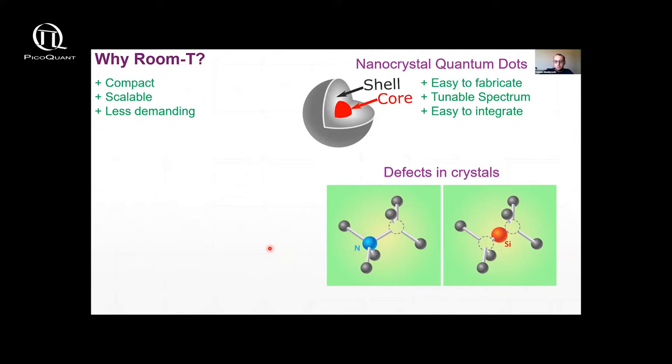However, trying to work at room temperature comes with some intrinsic challenges. One issue is isotropic emission. So this is also true for cryogenic sources. These sources tend to emit in all directions at all angles and you can only collect within some numerical aperture of your optics.